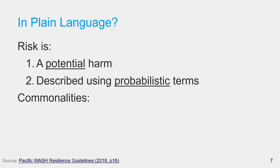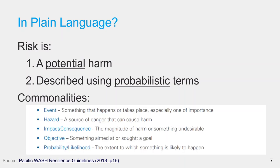What are the common terms in various definitions of risk? Events: something that happens or takes place, especially one of importance. Hazard: a source of danger that can cause harm. Impact or consequences: what is the magnitude of harm or something undesirable? Objective: what are the goals we are trying to achieve in a certain system or service, which will be impacted by a risk event? Probability or likelihood: the extent to which a harmful event is likely to happen.